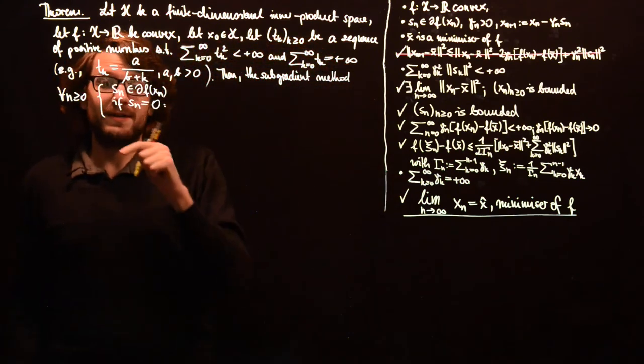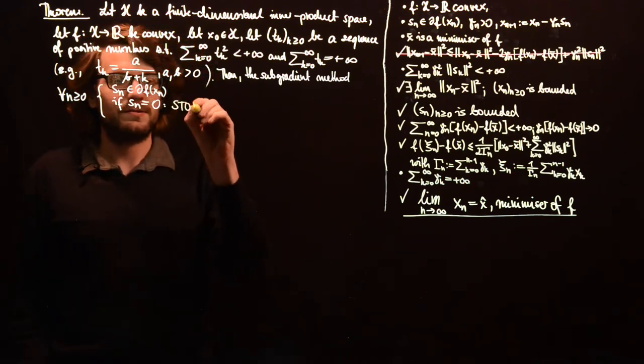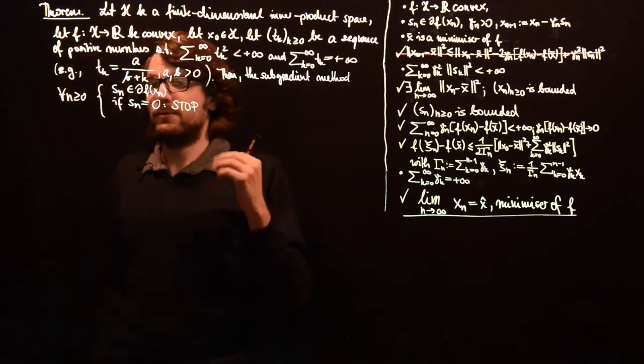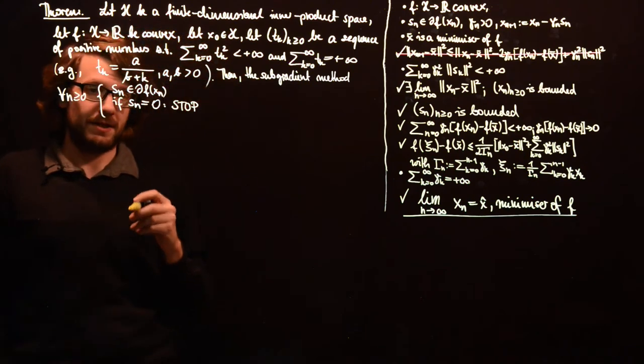And if norm of s_n is 0, then this is bad luck. But the good news is that we can just stop and we will see later that we will have found a minimizer of the function f.